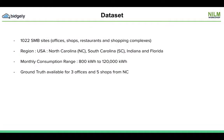The dataset we have used consists of 1022 SMB sites from the United States. We also have ground truth available for three offices and five shops from North Carolina, which is used for evaluation of the algorithm.